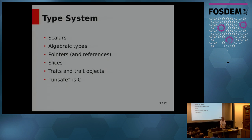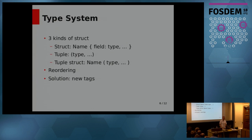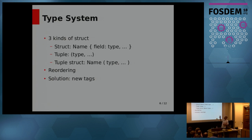Let's talk about some of the things in Rust that make it a little tricky for Dwarf. Rust has three kinds of structure types. It has regular structures — you use curly braces and every member has a name and a type, just like C. Rust also has tuples. I'm a 'tuple' person, but I don't judge.